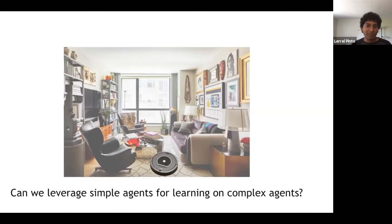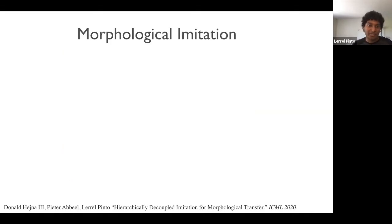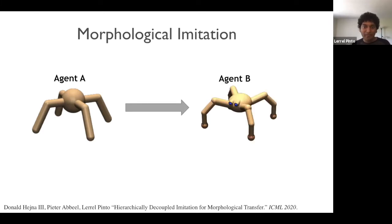And to sort of look at this problem, we formalize it as morphological imitation learning, where the goal is, if you have one agent, agent A, with a specific morphology, which has already learned how to solve a task, how can we transfer the learning from agent A onto a new agent, agent B, which has a different morphology? Note that usual imitation learning will not work over here because the action space is different if the morphology is different. So for instance, agent A in this case, which is an ant, has eight joints and hence an action space of eight, whereas agent B, which is a quadruped, has 12 joints and hence an action space of 12. So how do we bridge this gap when the action space is not the same?